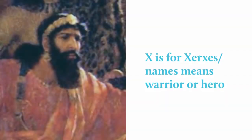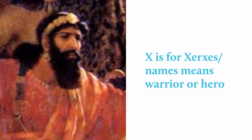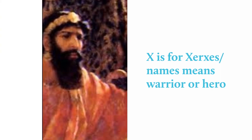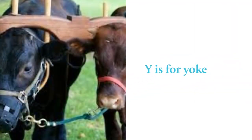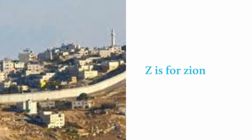X is for Xerxes — the name means warrior or hero. Y is for yoke. Z is for Zion.